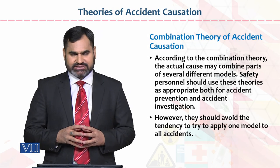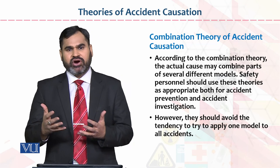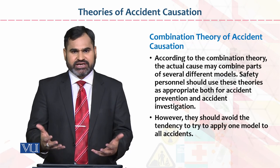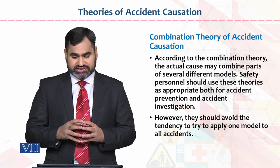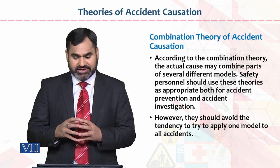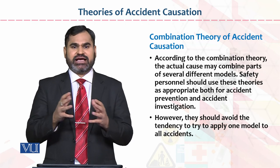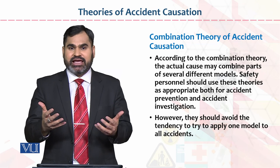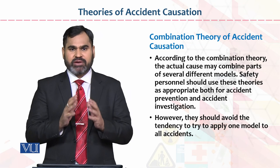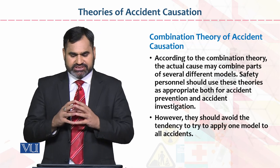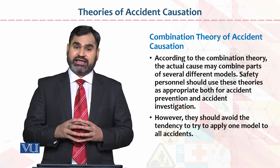Combination theories of accident causation — in accident causation, combination theory is also used. According to combination theory, the actual cause may combine parts of several different models. When several models are used as a whole, they tell us how we can avoid accidents or how we might become victims of accidents. This is basically called the combination theory.